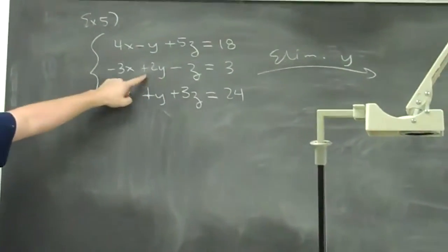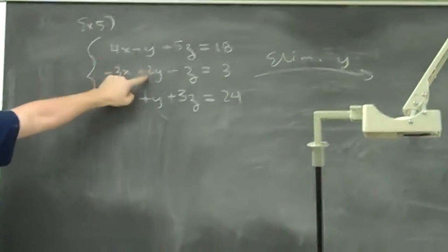These two are already set up to cancel. And if I just multiply this one by two, it'll cancel with that one.